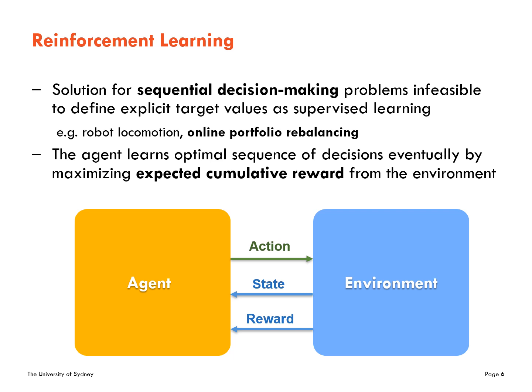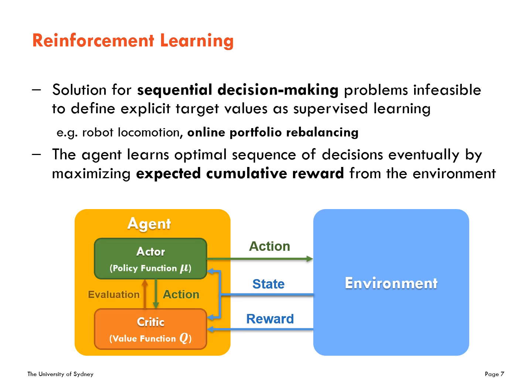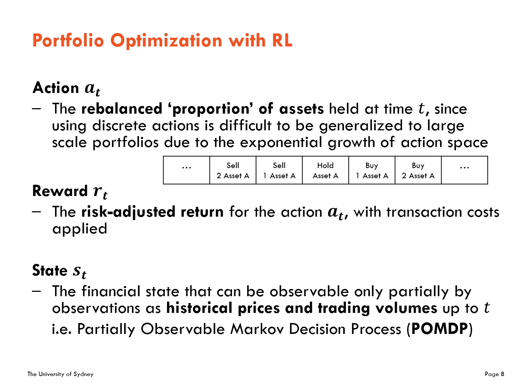In many cases of reinforcement learning, there are two factors in the agent: actor and critic. The actor is the one who makes a decision of action, and the critic evaluates the action by calculating the expected cumulative reward. In portfolio optimization, the action can be defined as the proportion of each asset to be invested. This can be generalized to large-scale portfolios, which is difficult with discrete actions. If trading volume is confined to small numbers, discrete actions work, but for tens of thousands of assets, it is not scalable.